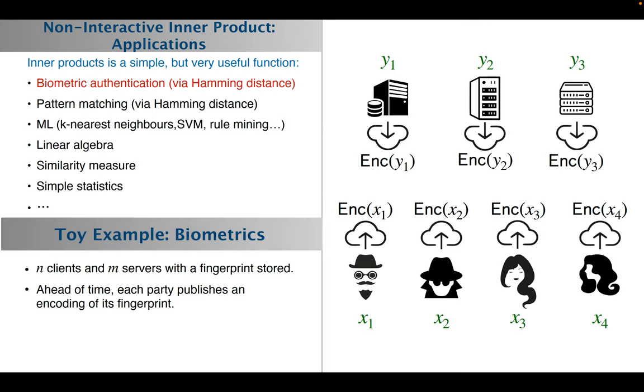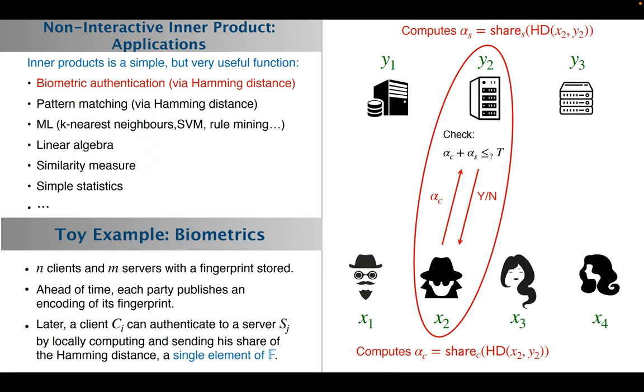For example, with biometric authentication, you could have n clients and m servers, each with a fingerprint stored. All parties will first broadcast an encoding of their fingerprint. Then at any time, a server and a client could locally compute the Hamming distance between the two fingerprints. Hamming distance can be reduced to computing an inner product without further interaction. Afterwards, the client and the server will have shares of this Hamming distance, and the client will just have to broadcast a single element from which the server could reconstruct the Hamming distance and check whether it's below the acceptance threshold. That will lead to a very efficient multiparty biometric authentication mechanism.